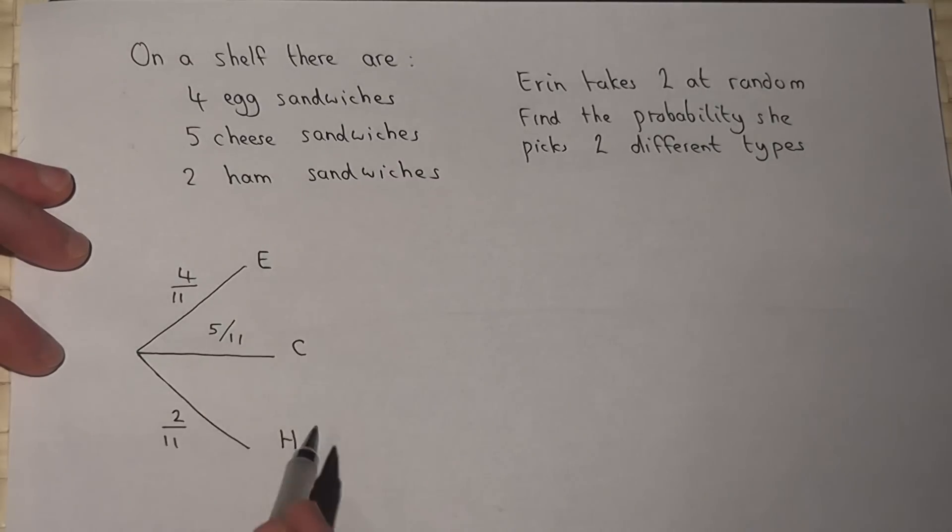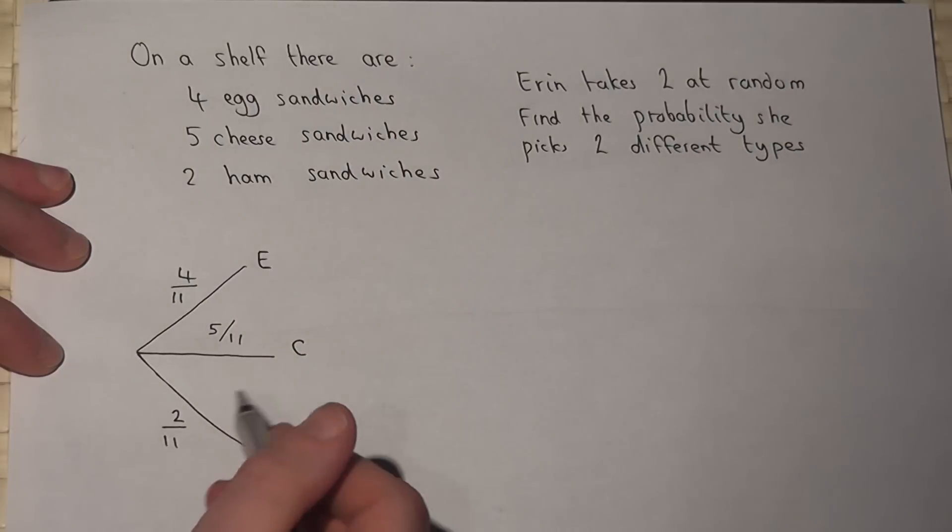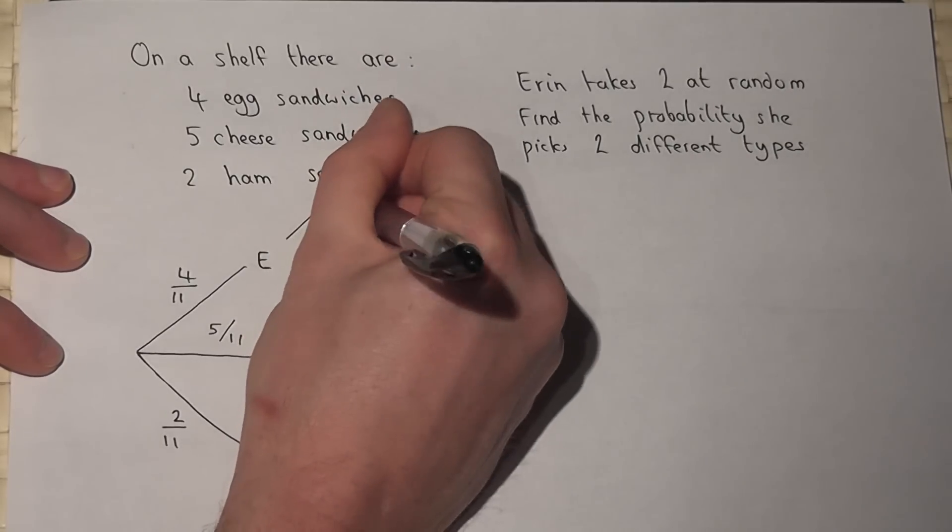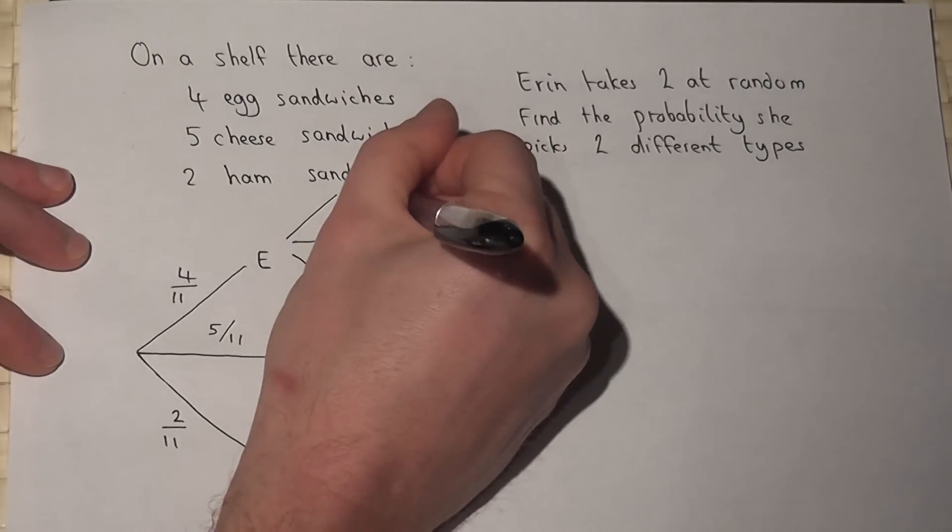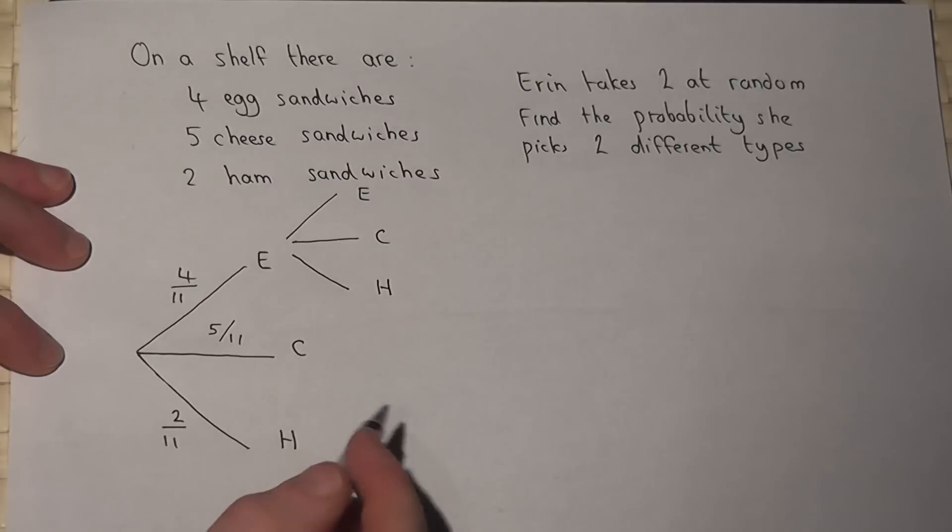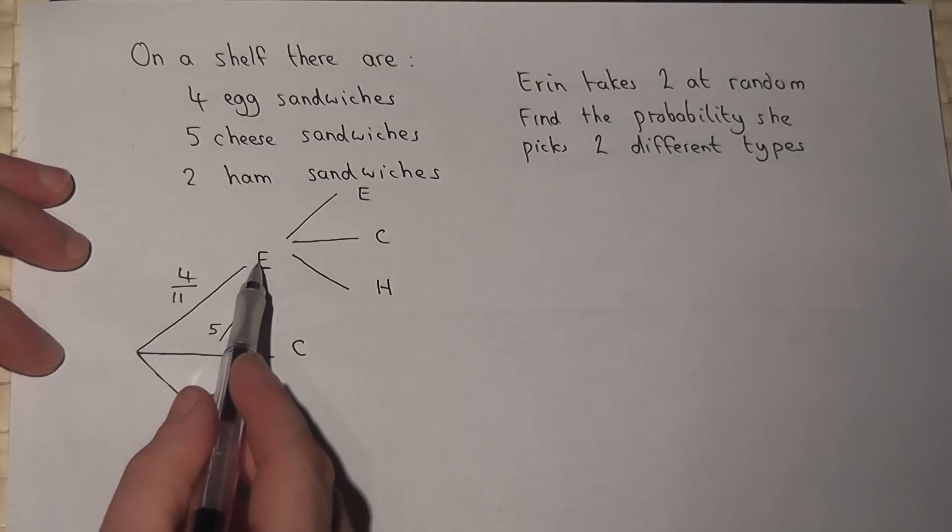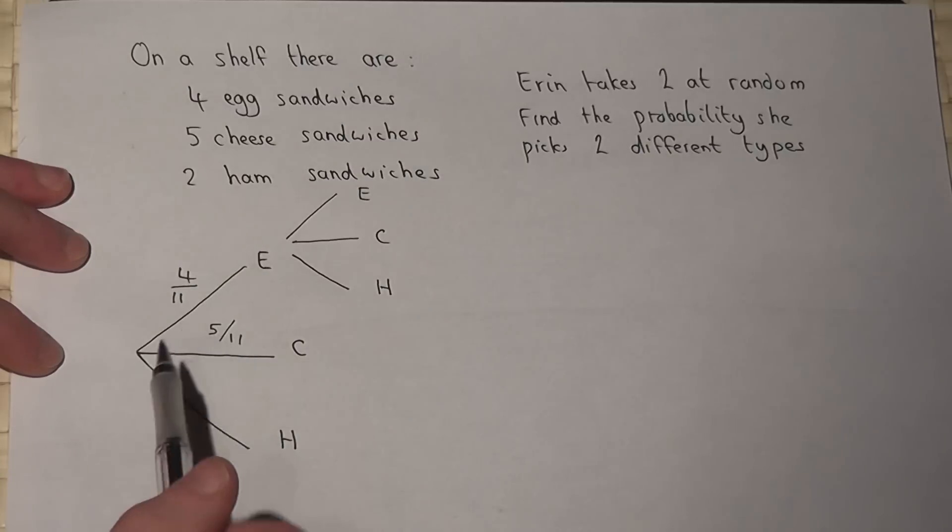Now having picked an egg, when she then goes for the second sandwich, there are then three choices: there would be an egg again, or a cheese, or a ham. But having picked an egg for her first sandwich, there's one less egg sandwich on the shelf and there's also one less in total.